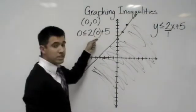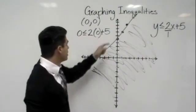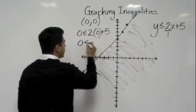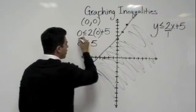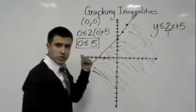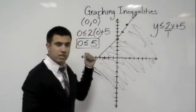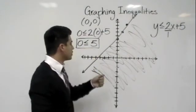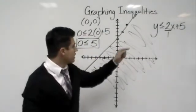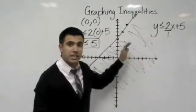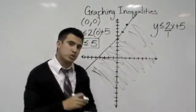2 times 0 is 0, plus 5 is 5. 0 is less than or equal to 5. Okay, is that true? Is 0 less than 5? Well, 0 is less than or equal to 5, so that makes this equality true, so we know that we shaded in the right region. Good job. Good job. We'll do another one.